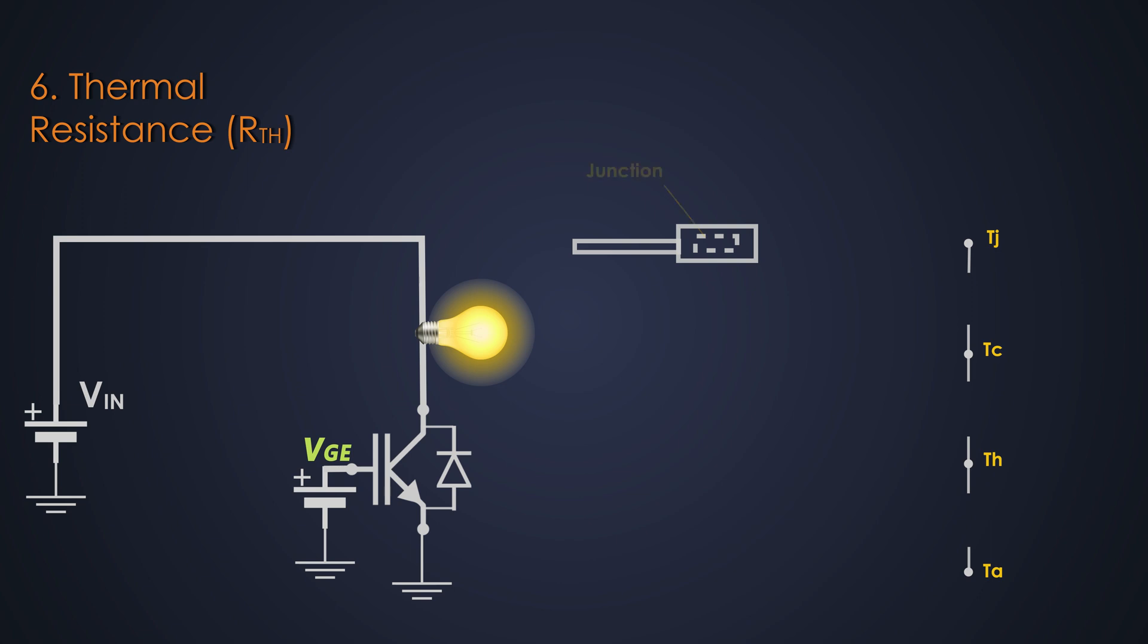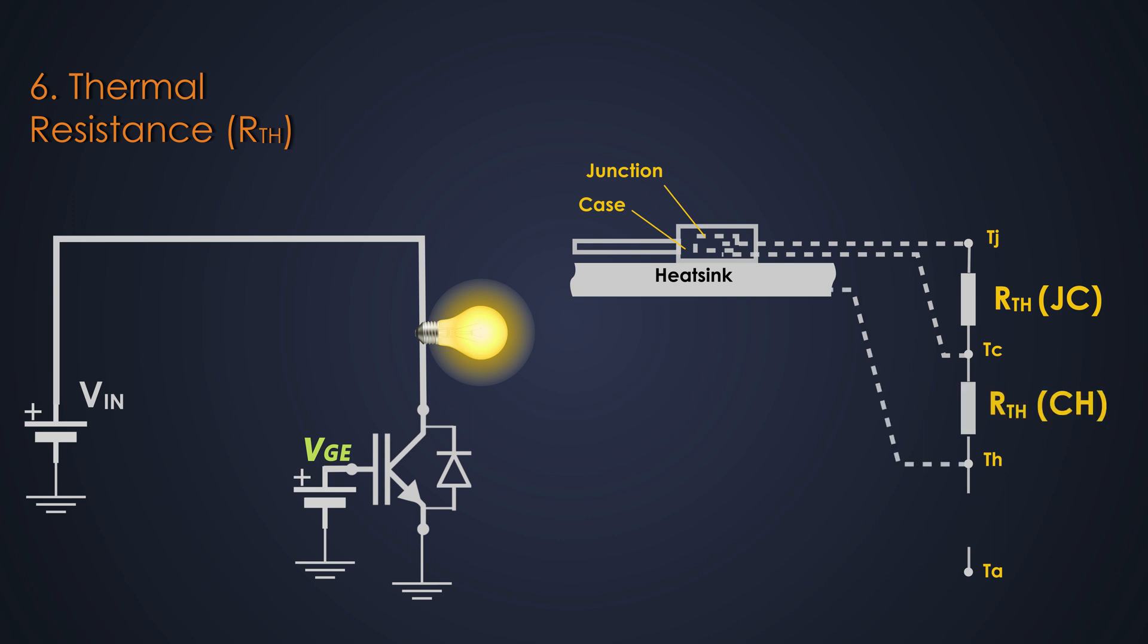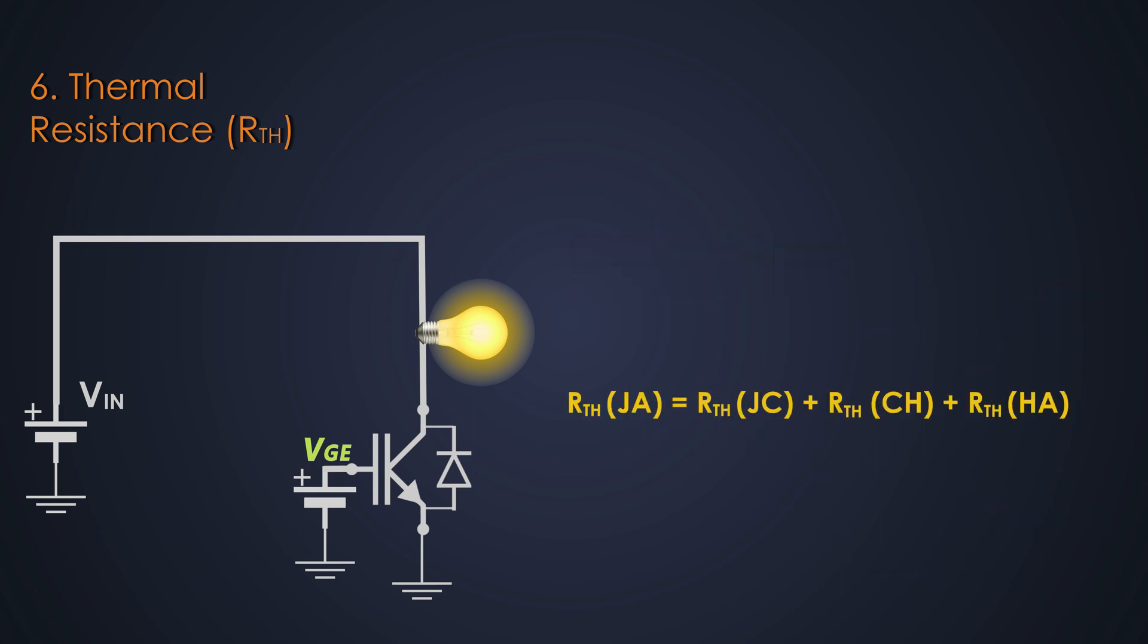The thermal resistance from the device junction to the device case is the R-theta JC. It is the thermal resistance when the package is mounted on infinite heatsink. The contact thermal resistance between the device case and the heatsink is R-theta CH. The thermal resistance between the heatsink to ambient is R-theta HA. And R-theta JA is the addition of all of these parameters.